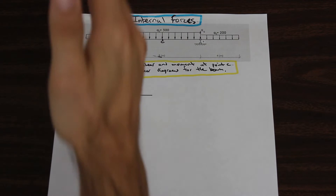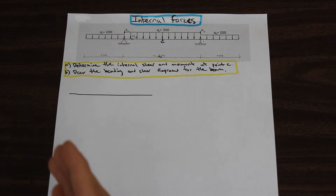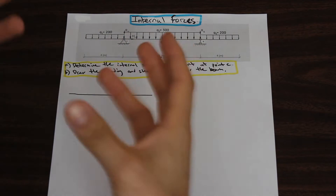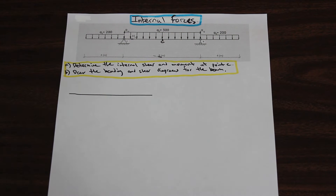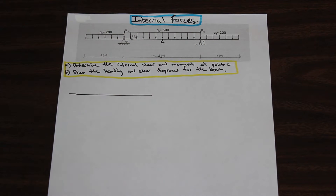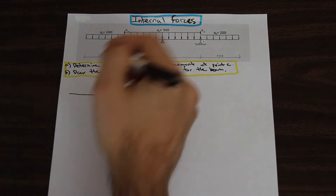You should know by this point that to find the internal forces on a member, you need to cut it at that point. Internal forces don't show from the outside because they are acting within the beam and counteracting each other, as well as counteracting external forces. But when we cut the beam at a point, those internal forces will show. First, we need to find the reactions, and then we can evaluate what we are asked to.